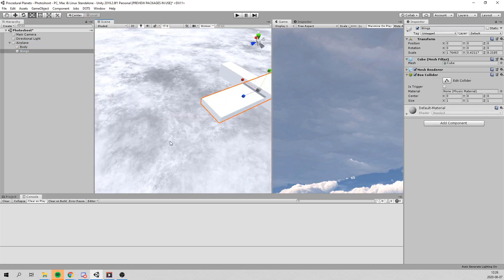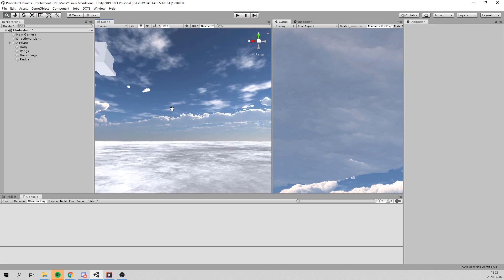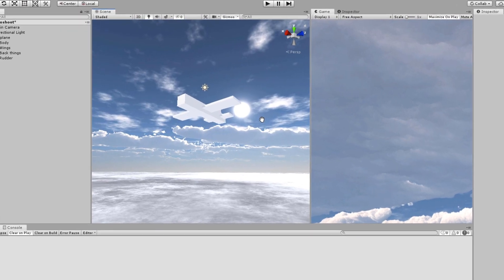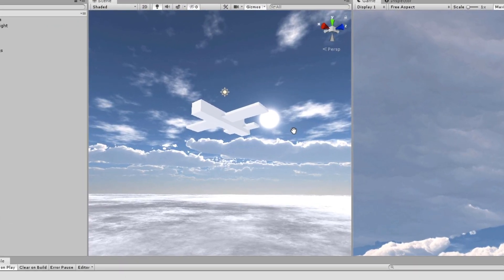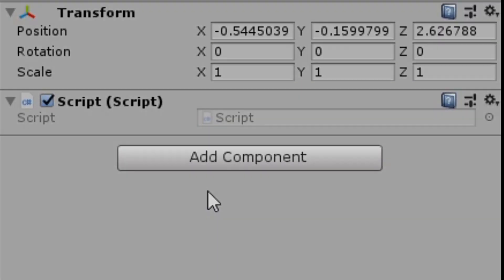I began by creating this airplane using nothing but Unity's standard cubes. It's amazing how beauty can be created using only such simple tools. I then created a script, added to the plane, and jumped right into Visual Studio.